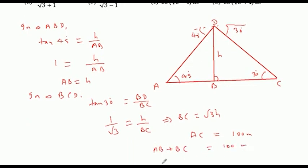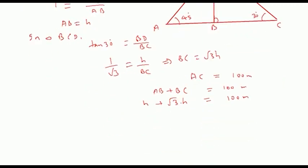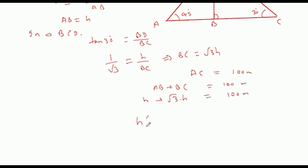AB is how much? AB equals H, BC equals root 3 H. So H plus root 3 H equals 100 meters. Taking H common: H times (root 3 plus 1) equals 100 meters. Therefore H equals 100 divided by (root 3 plus 1) meters.